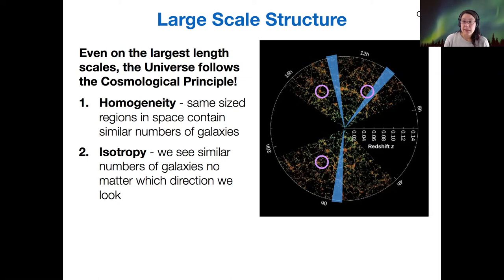The other thing that we can extract from this map is that the ideas of the cosmological principle do seem to hold. If we look at different regions, as long as we're looking at regions that are the same size, we see relatively similar numbers of galaxies within each region. No matter which direction we point our cone of vision, we see relatively similar distribution in all directions.